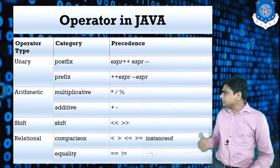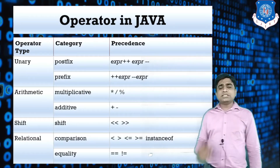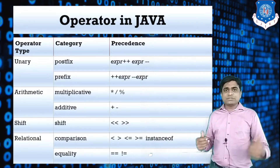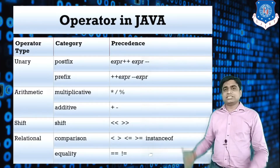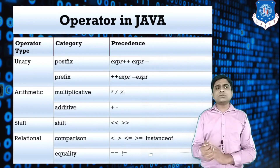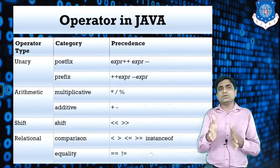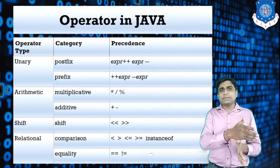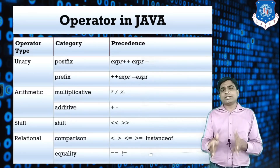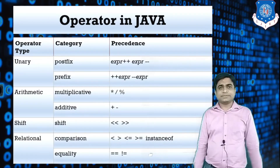The next operator is the shift operator. There are two types: left shift and right shift. With left shift, you shift the bit value one position to the left side. With right shift, you shift one bit value to the right side.